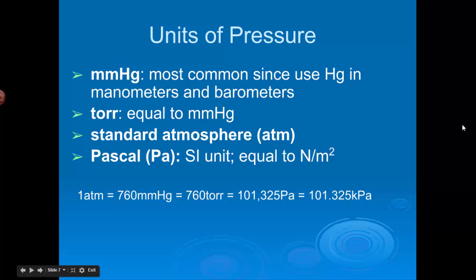So we have some conversions you should be familiar with. We have one atmosphere, which is equivalent to 760 millimeters of mercury, or 760 torr, which is equivalent to 101,325 pascals, or more commonly we say 101.325 or just 101.3 kilopascals. All of those are equivalent measurements, and so we can use them to make conversions.